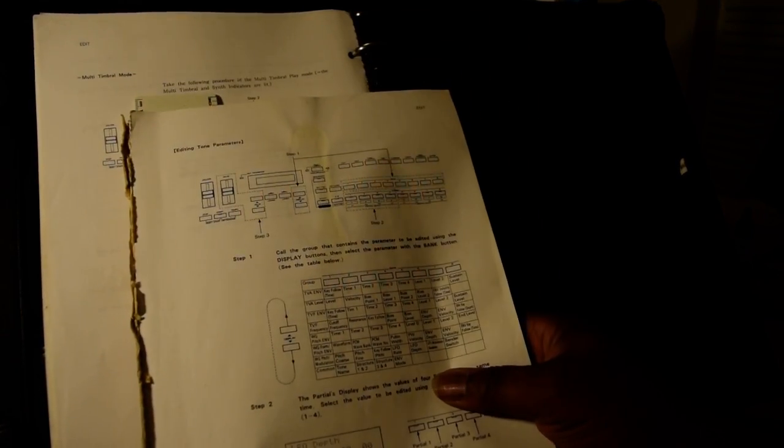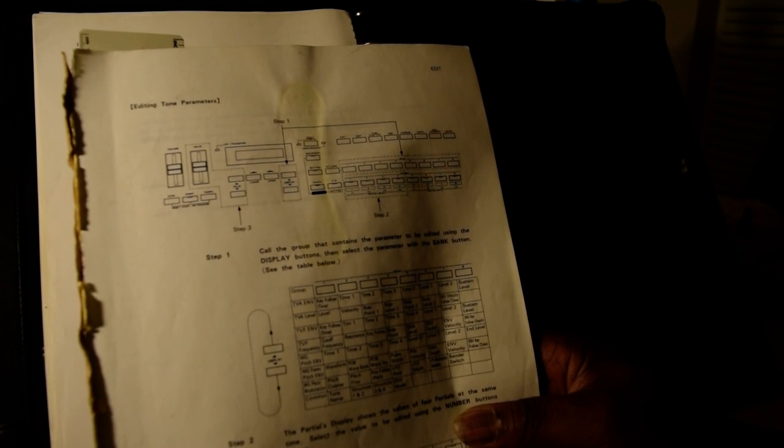I don't know whether or not y'all can see this, but let me go ahead and go over some things with you. It says TVA envelope, TVA level, TVA frequency, WG pitch envelope, WG form pitch envelope, WG pitch, and there's a common.